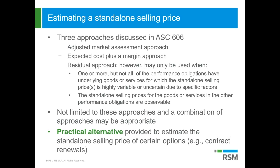There is a practical alternative at the bottom of the slide related to estimating the price of options. It can be used when the option provides a material right to get future goods or services, and those future goods or services are both similar to the original goods or services in the overall contract and are provided in accordance with the terms of the original contract. If you apply this practical alternative, it essentially results in allocating the transaction price to those optional goods or services you expect to provide, rather than allocating anything to the option itself. Again, this is a practical alternative and does not need to be applied.